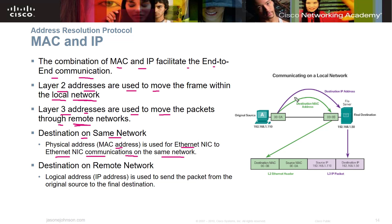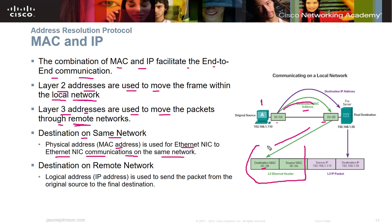For example, on a local network, the PC sends to the file server using the destination MAC address. The server sees the MAC address, matches it, and sends the file back. They communicate on a local area network without being routed — they only use Layer 2. If you need to go outside the LAN, such as to the internet, that's when you go to Layer 3 and start using IP addressing.